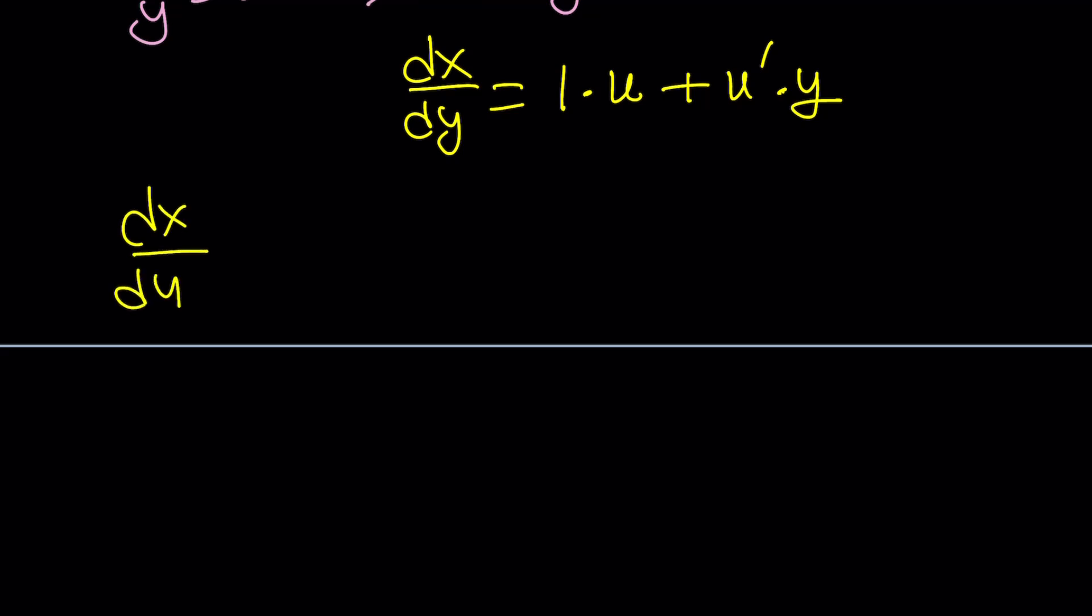dx/dy can also be written as u + 1/u, right? That's what we got after the substitution. At the same time, it's equal to u + u'y. You like that? Let's find out. This is awesome because now it'll turn into a separable equation.